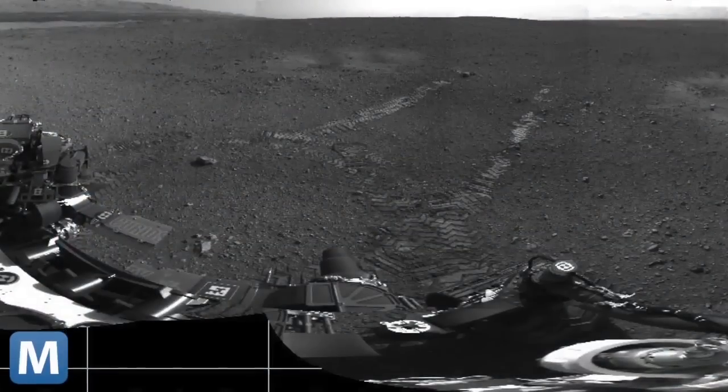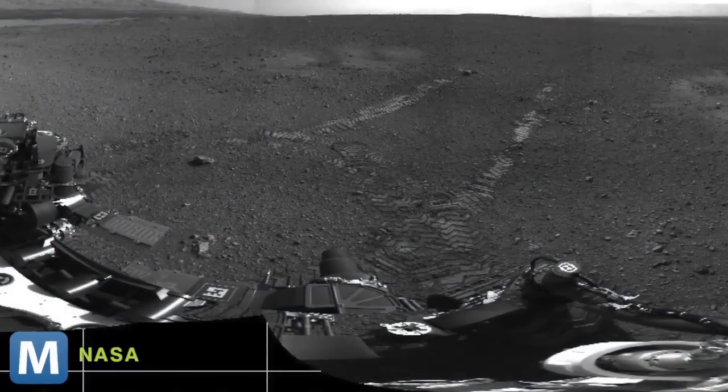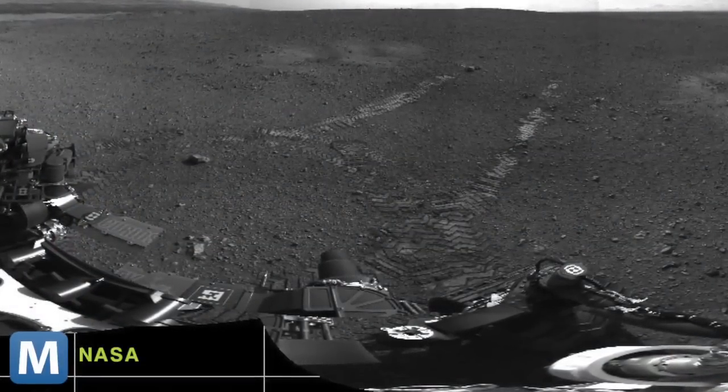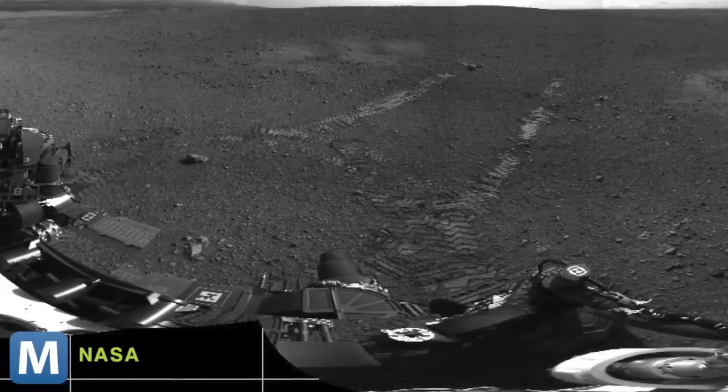So with every spin of its wheels, Curiosity is riding on Mars. A bit of aesthetic indulgence, sure, but it's also got its uses. In the absence of other measurable landmarks, the scientists say they can use Morse markings to calculate the distance Curiosity has traveled.